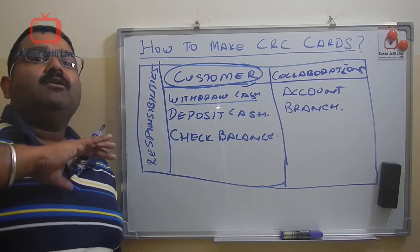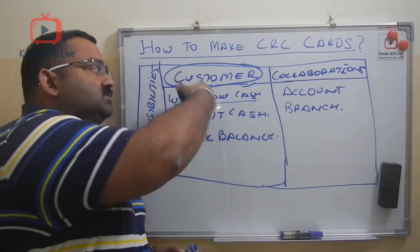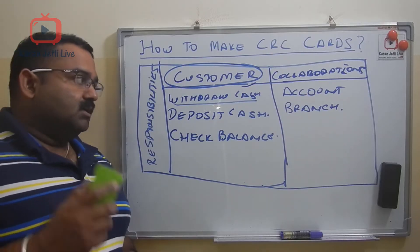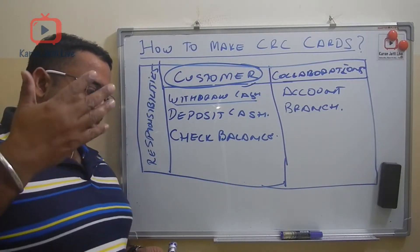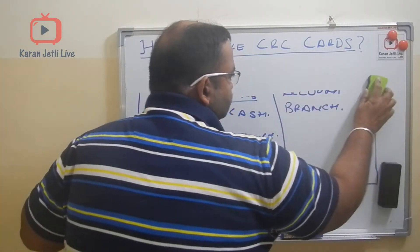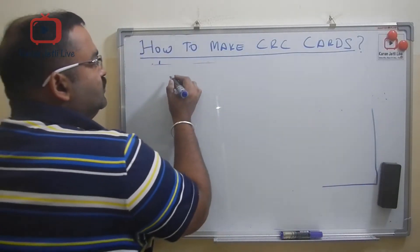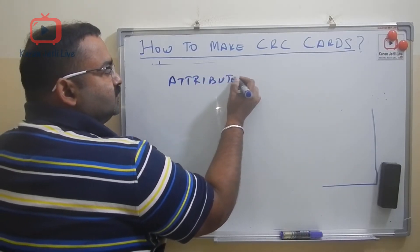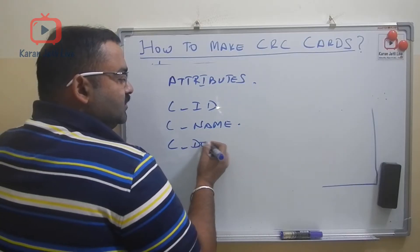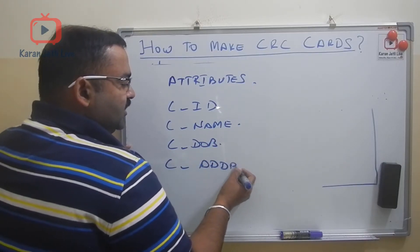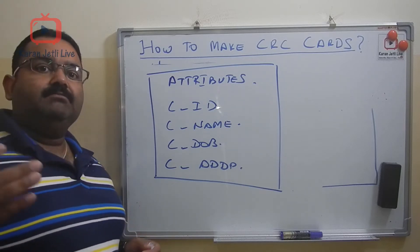On the other side of the CRC card, we write the main attributes of this class. The main attributes of Customer include: customer name, customer ID, customer date of birth, and customer address, and so on.